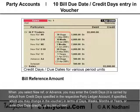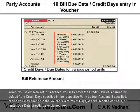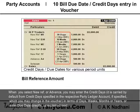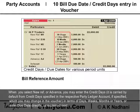Bill due date and credit days in voucher: when you select a new reference or advance, you may enter the credit days. It is carried by default from the credit days specified in the respective party ledger account, if specified, which you may change in the voucher in terms of days, weeks, months, or years — or enter the due date directly.